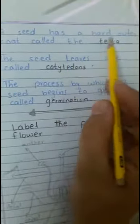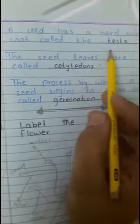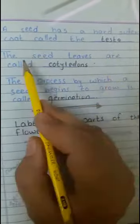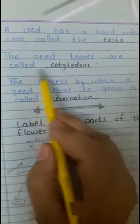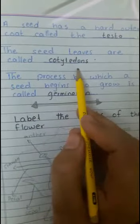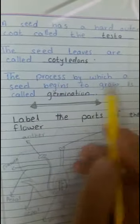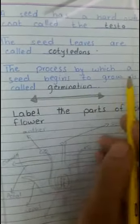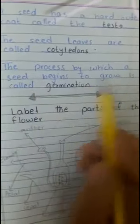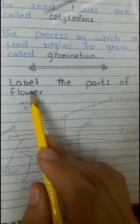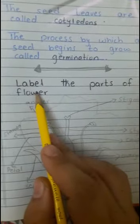A seed has a hard outer core called the testa. The seed leaves are called cotyledons. The process by which a seed begins to grow is called germination.